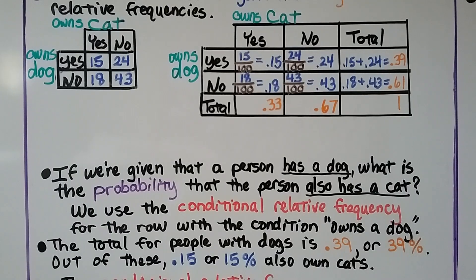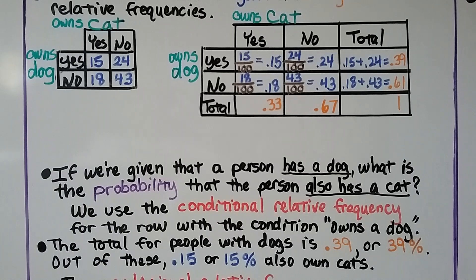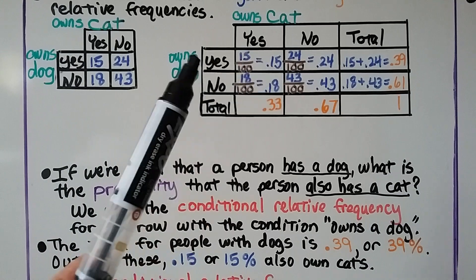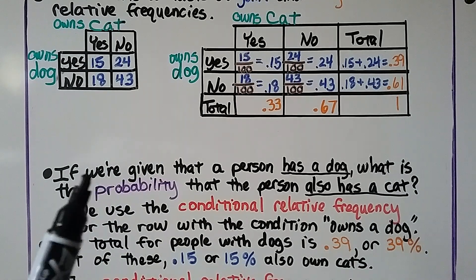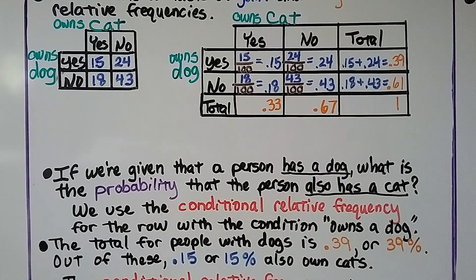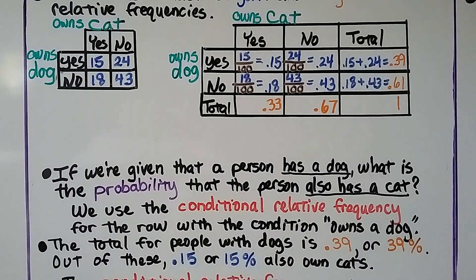If we're given that a person has a dog, what is the probability that the person also has a cat? We use the conditional relative frequency for the row with the condition owns a dog, and the total for people with dogs is 0.39, right here, or 39%, and out of these, 0.15 or 15% also own cats.